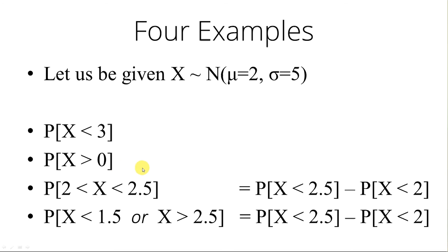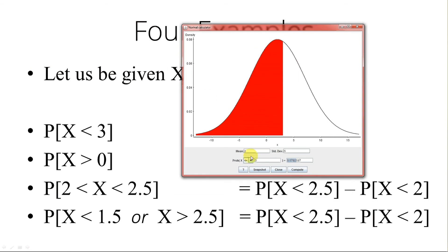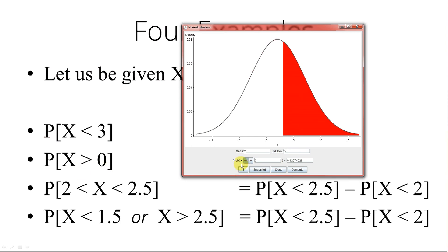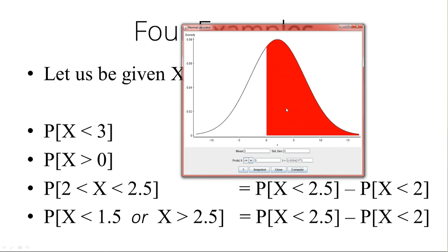Second example: the probability that X is greater than 0. Let me pull up the normal curve. The distribution is the same — mean 2, standard deviation 5. We want the probability that X is greater than something, so we'll change this to greater than, and we want the probability that X is greater than 0. Change that to 0 and compute. The shaded area is the probability that X is greater than 0, which is 0.6554. Pretty straightforward.